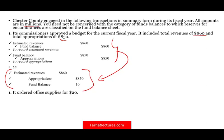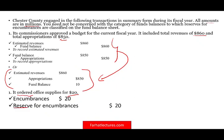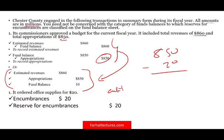We ordered office supplies for $20 million — we just ordered or signed a contract, we didn't receive anything yet. We debit encumbrances $20 million and credit reserve for encumbrances $20 million. What that means is we're reserving $20 million from our appropriation of $850 million for office supplies. Both of these are equity-type accounts and will be removed later on. This is to record the order of supplies.